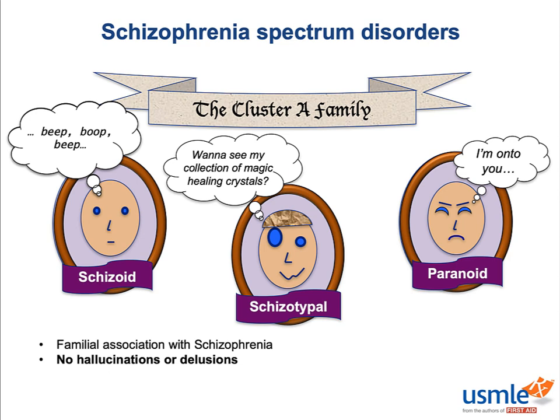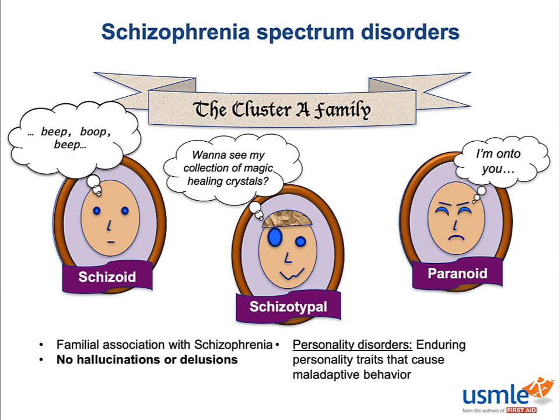The key to distinguishing paranoid PD and schizotypal PD from schizophrenia is that they're not psychiatric disorders at all, but rather personality disorders — namely, bizarre maladaptive personality traits that exist for most if not all of their lives. A vignette describing a patient with paranoid or schizotypal PD will usually mention that his friends say he's always been like this, whereas schizophrenia will more often present with an acute onset in their 20s or 30s with episodic psychosis.